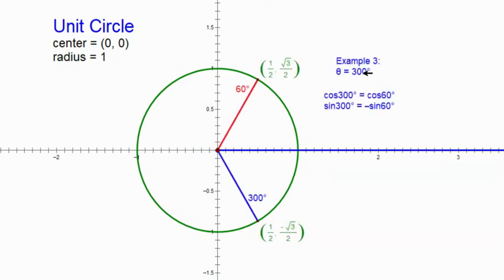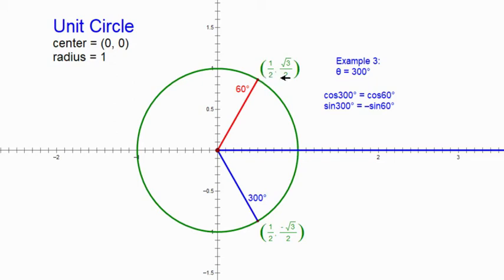One more example: 300 degrees, which is in quadrant four. The reference angle is the amount needed to complete a full circle: 360 minus 300 equals 60 degrees. So the cosine of 300 is the same as the cosine of 60, and the sine of 300 is the negative sine of 60. From the special triangles: cosine of 60 is one half, so cosine of 300 is also one half. Sine of 60 is root three over two, so sine of 300 is negative root three over two.